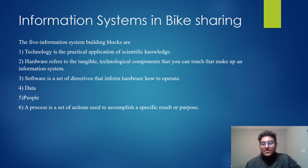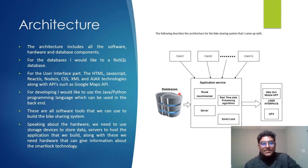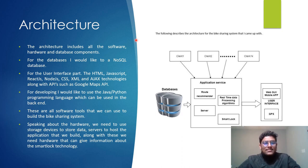The architecture includes all the software, hardware, and database components. This is my architecture diagram. For the database, I would like to use SQL. For the user interface, HTML, JavaScript, CSS, React.js, Node.js, XML, and Ajax technologies, along with APIs such as Google Maps API.